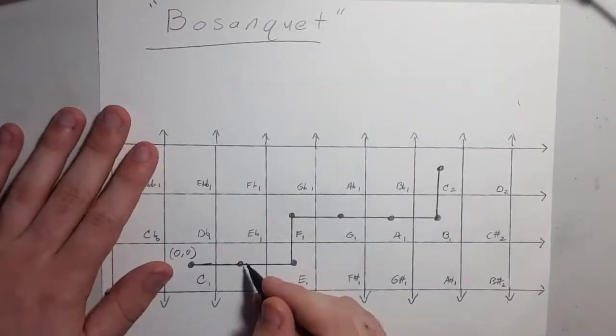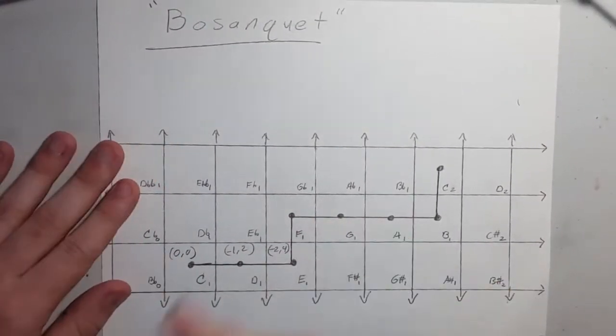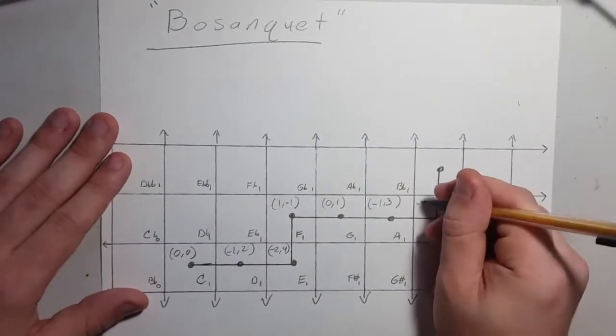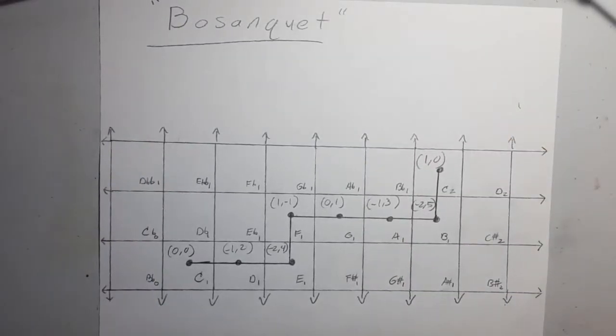That's because the scales are defined by the notes as locations in the period generator array, and those locations remain consistent on a 2D interface defined by the same parameters, even as the size of the generator and period change.